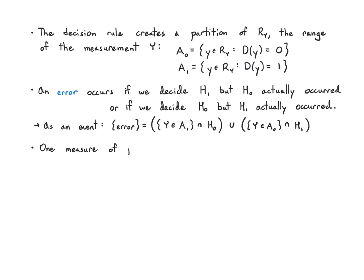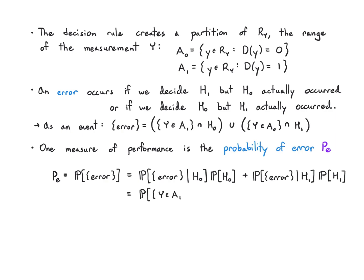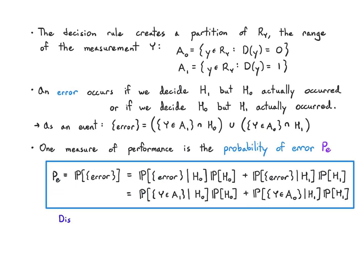One way to measure overall performance is to calculate the probability of error, pe. Using the multiplication rule, we write it as the conditional probability of error given h0 times the probability of h0, plus the conditional probability of error given h1 times the probability of h1. That works out to the probability of falling into a1 given h0 times P(h0), plus the probability of falling into a0 given h1 times P(h1).